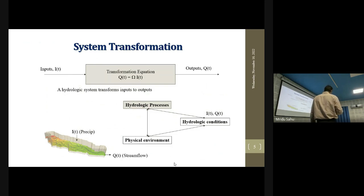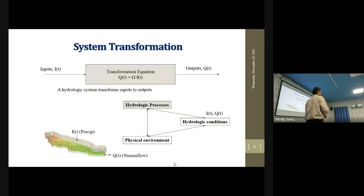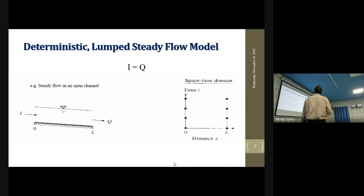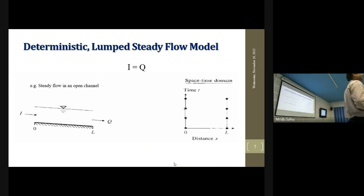In the system, you can see input as well as output. There is a transformation — some models, equations, characteristics, and physical flow behavior are associated — and you get the output. We need to run a model on hydraulics, so let's move forward.